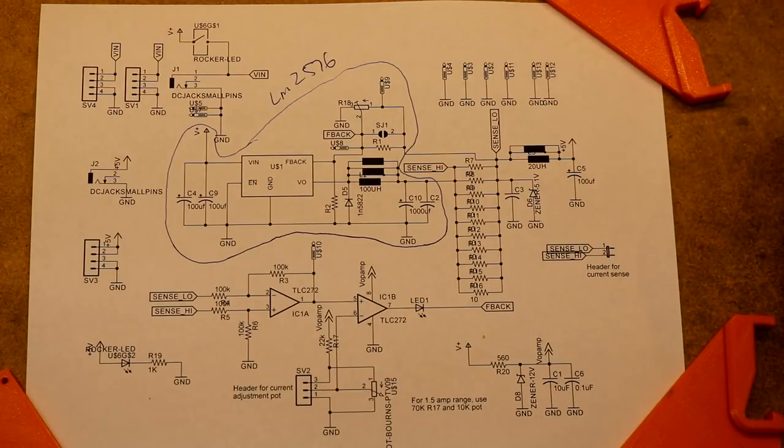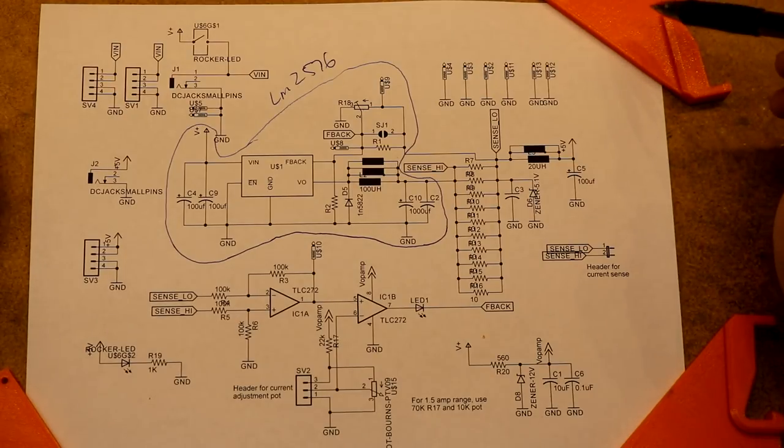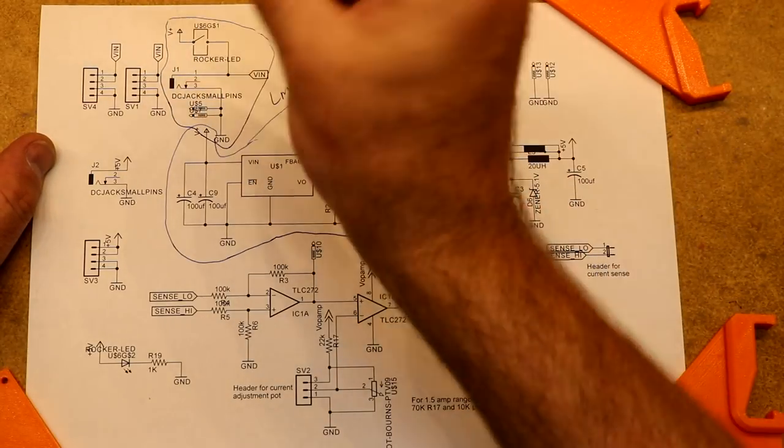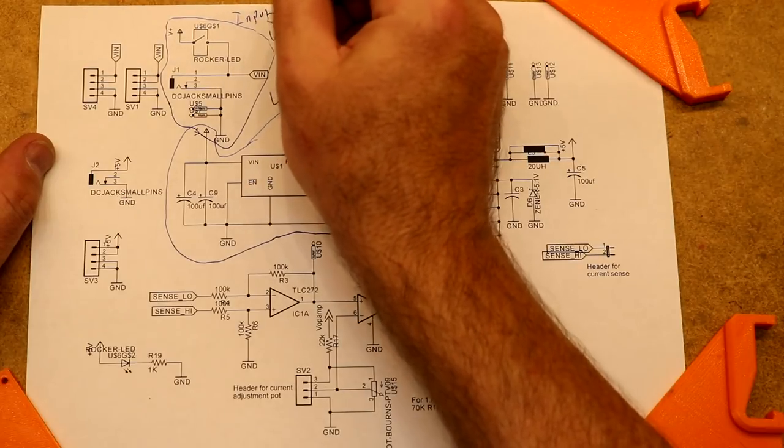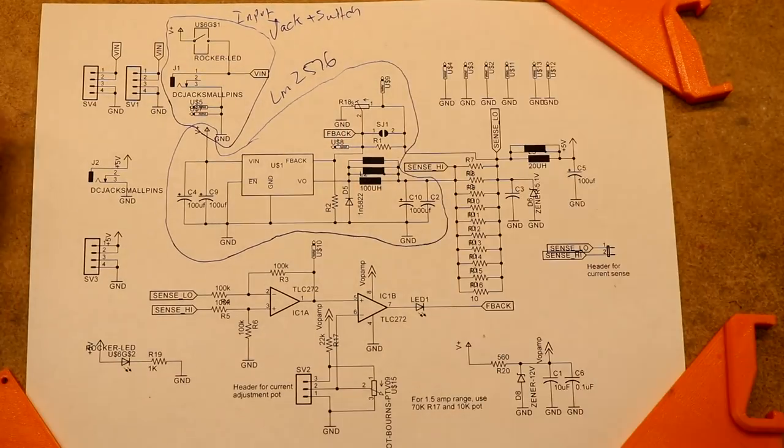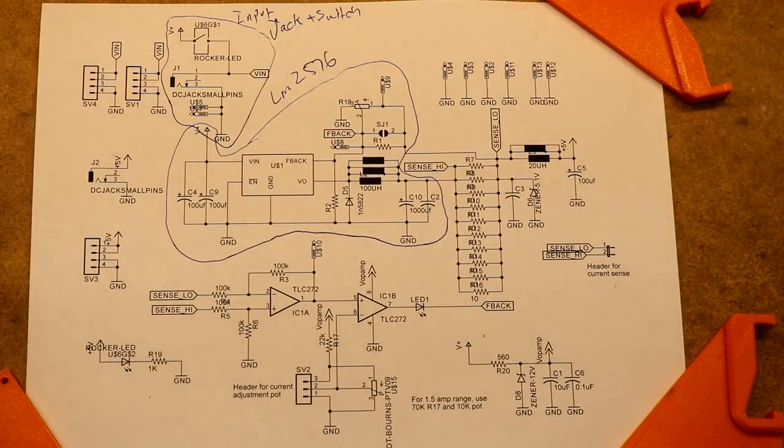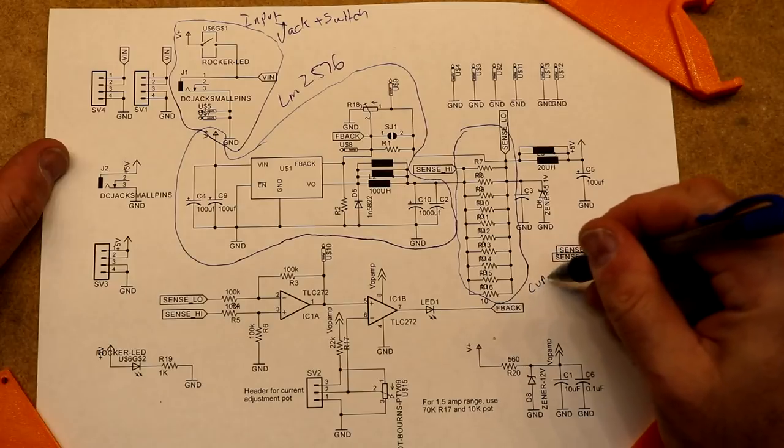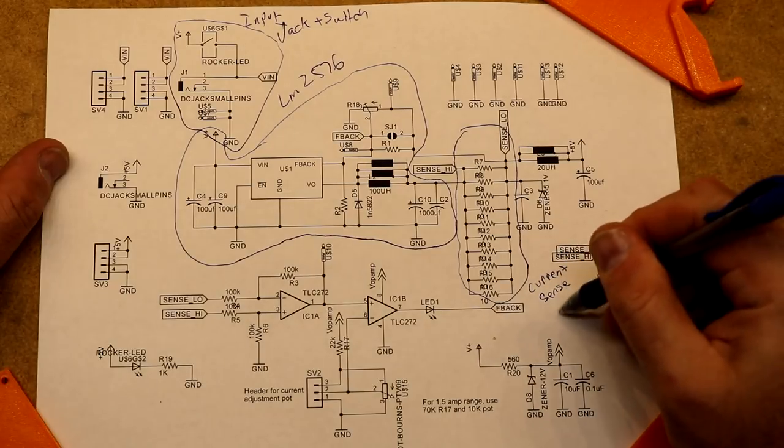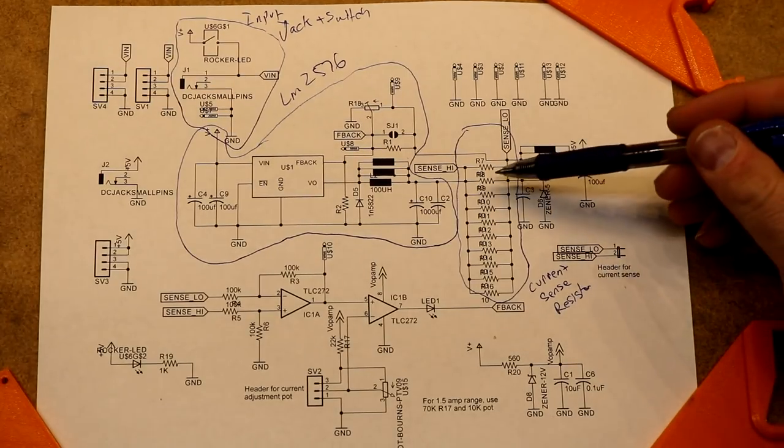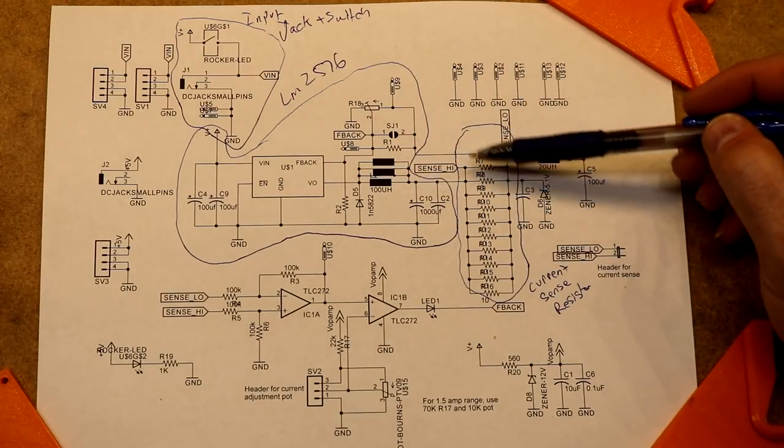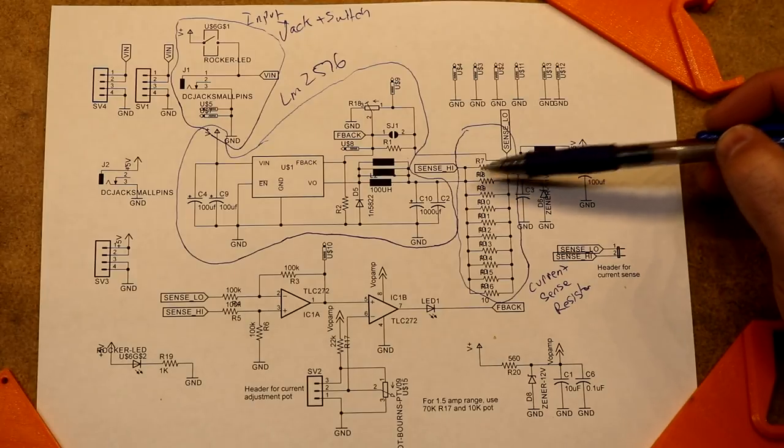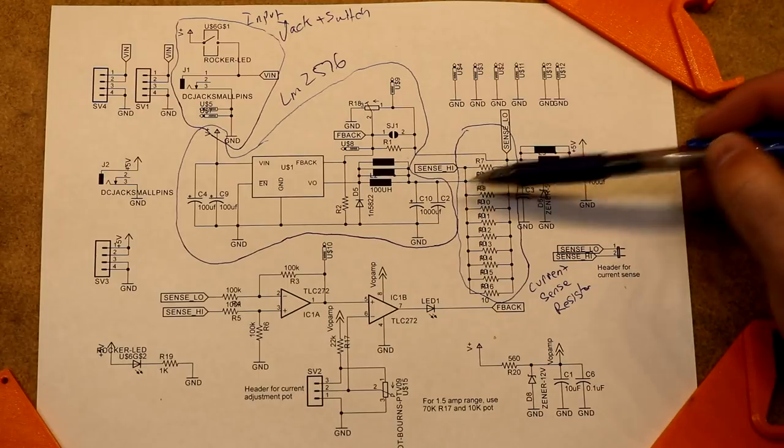Over here on the feedback resistor, I've got several different options. For a 10 turn pot, for a fixed resistor, solder it straight across in case you're using one of the fixed voltage LM2576s. I've kind of incorporated footprints to cover every conceivable thing you'd need. Coming into the LM2576, over here is the input jack and the power switch, so we come in through a barrel jack and there's a rocker switch.